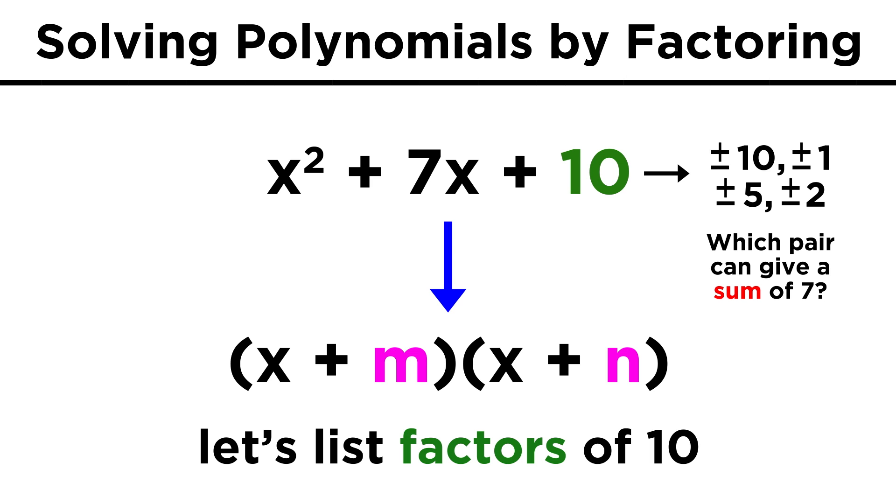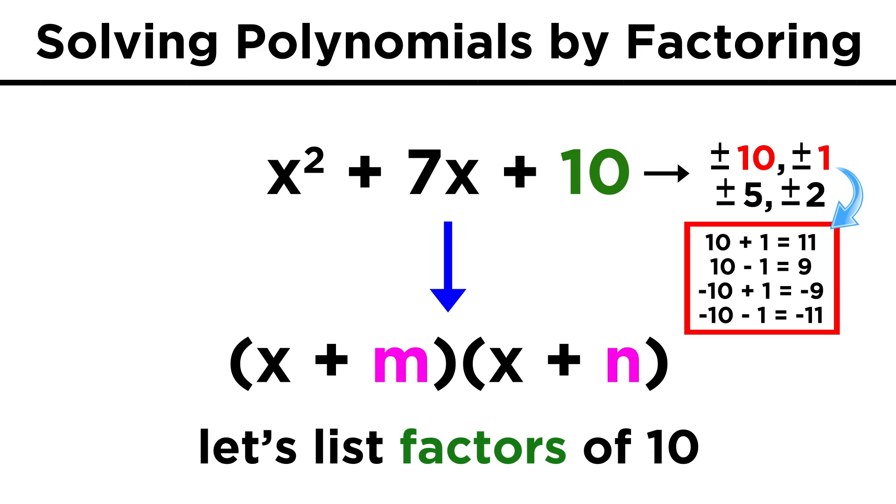Now we ask ourselves which of these pairs of factors can add or subtract in some way to give seven. Ten and one won't work, since we could get eleven or nine, either positive or negative, depending on the signs that go in the binomials, but we can't get seven.